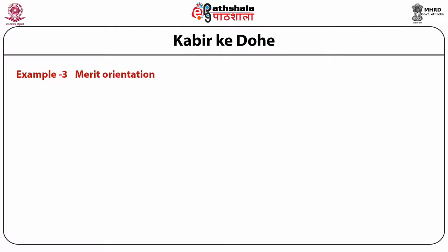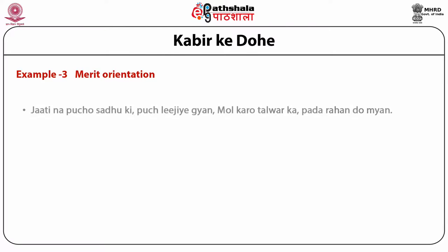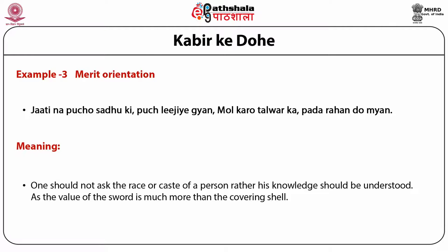Example 3 relates to merit orientation: 'Jati na poochho sadhu ki, pooch lijiye gyan. Mol karo talwar ka, pada rehne do miyan.' One should not ask the race or caste of a gentleman; rather, his knowledge should be understood, as the value of the sword is more than the covering shell. Kabir says we must not judge a person by his clothes, caste or appearance, as these don't make a person great or small. Their knowledge, soul and kind-heartedness are the real assets — the real gems of a person. So focus should be on the real self, not on physical appearance.